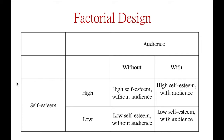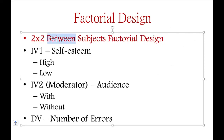Specifically, this two-way ANOVA is the between-subjects type, meaning there are separate samples representing each condition. All in all we have four conditions: high self-esteem without an audience, high self-esteem with an audience, low self-esteem without an audience, and low self-esteem with an audience. The participants in these four conditions are four separate groups, which makes this a between-subjects factorial design.